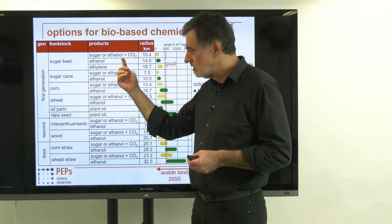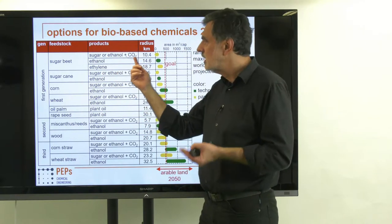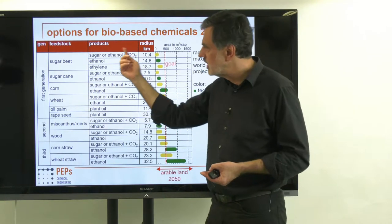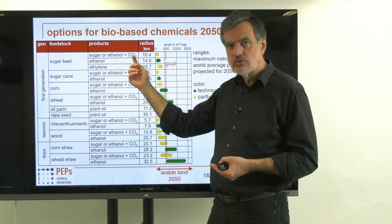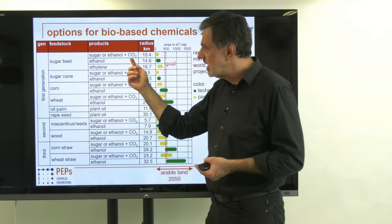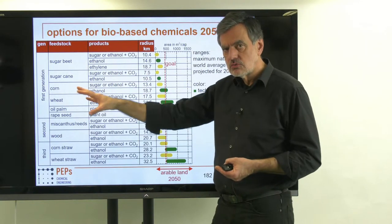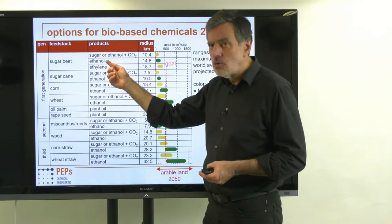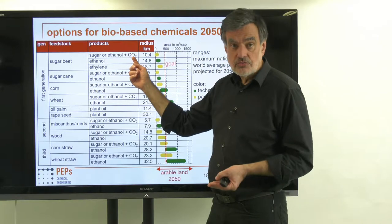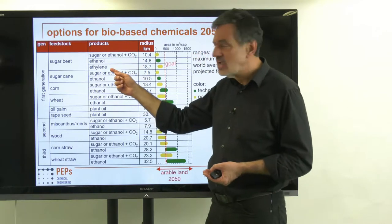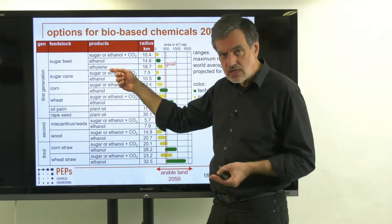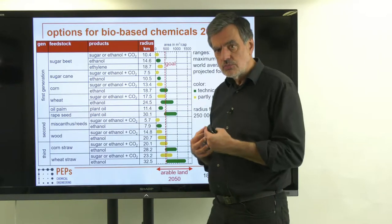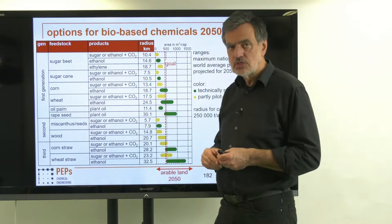We can also use the ethanol pathway, where we lose CO2 but reactivate it with hydrogen to form methanol, using all atoms from the sugar in the final product. Alternatively, we can use only the ethanol and forget the CO2 — less efficient — or convert ethanol to ethylene, losing water. Each step losing mass means we need more land area to produce the same kilograms of final product.